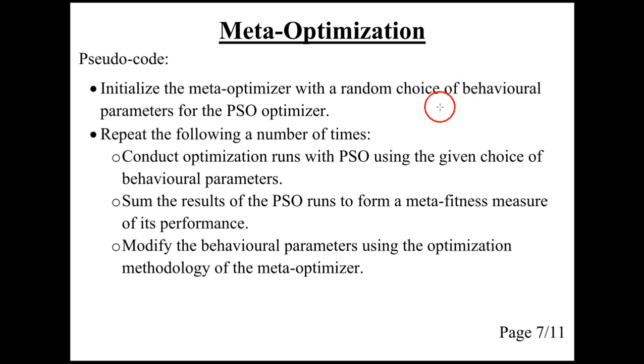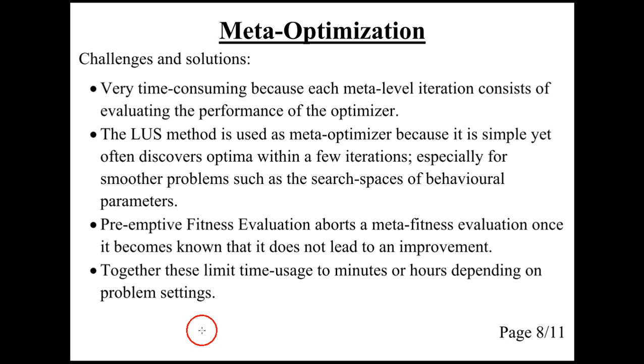This is what the pseudocode looks like. There are a number of challenges in doing meta-optimization, and they have to do with the time-consuming nature of repeating optimization runs many, many times. So we need a good meta-optimizer, and the one named LUS, which is Danish for Laos, works well because it's efficient and fairly quickly finds good parameters. And when it is combined with a simple technique called preemptive fitness evaluation, it means that time usage is minutes or hours depending on problem settings.